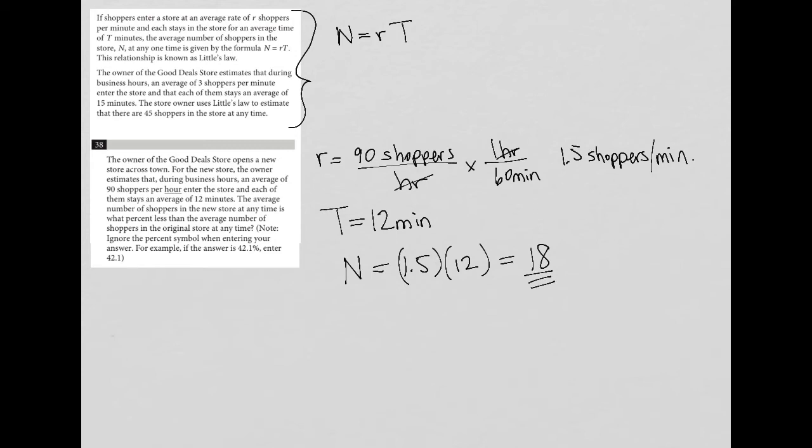So the average number of shoppers in the new store at any time is what percent less than the average number of shoppers in the original store at any time? The original store, we were given that information as 45. So we're comparing 18 versus 45.